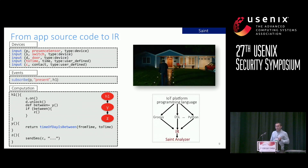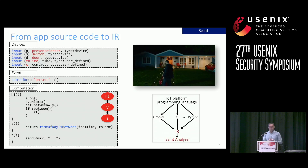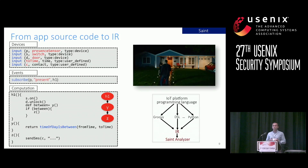Based on our study, we found that IoT platforms generally structure their applications similarly regardless of purpose or complexity. The first step of SAINT is translating the source code of an IoT app into an intermediate representation by exploiting this structure. To illustrate, you can see the functionality of an app on the right and the IR of the app on the left. The app turns on the lights, unlocks the door, and sends a short message to a security service when the users arrive home. The IR includes three code blocks: Devices, which specifies device types and inputs required; Events, which includes the event and corresponding event handler; and Computation, which represents the relationship between entry points and other functions and is where we obtain the call graph.